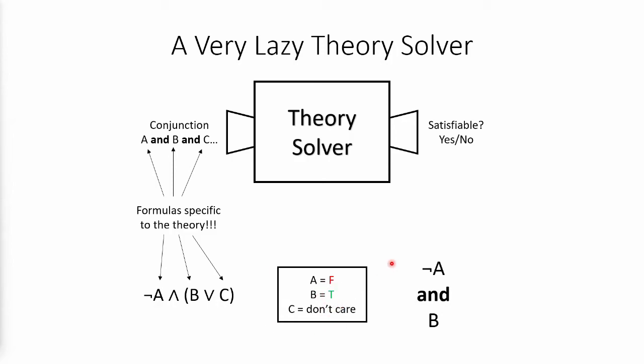So there is this sort of back and forth between DPLL and the theory solver. The DPLL will keep giving us assignments until we find one that the theory solver agrees on.